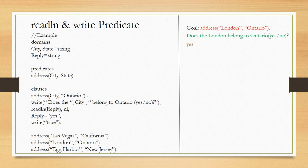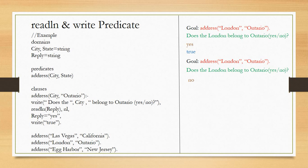If instead the user types 'no', it contradicts the fact reply = yes, so the whole rule becomes false and the remaining lines are not checked. The rule exits as false. This is how the readln and write predicates work together.